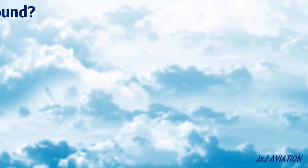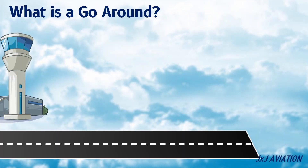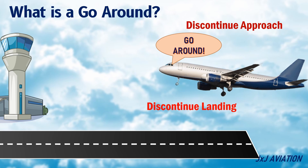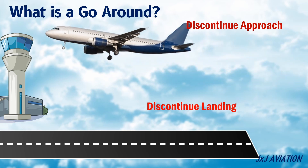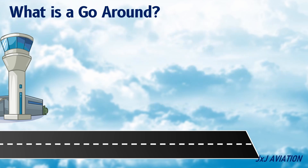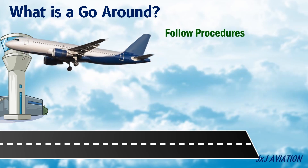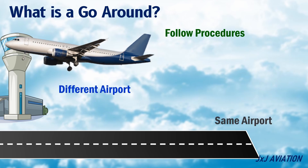What is a go-around? In an aircraft, a go-around occurs when the cockpit crew decide to discontinue an approach or discontinue a landing. Once a decision has been made to perform a go-around, the pilots have to follow certain procedures to perform the go-around and try another approach at the same airport, or divert to a different airport.